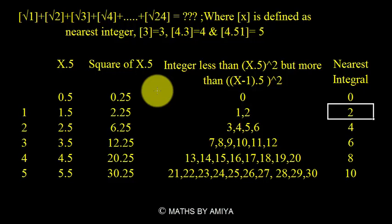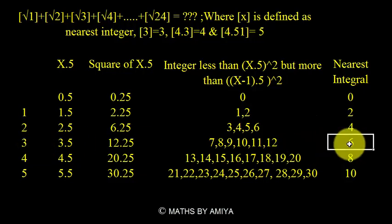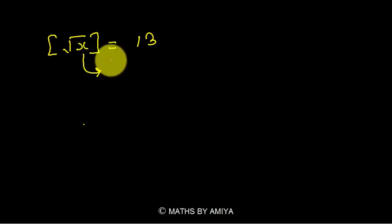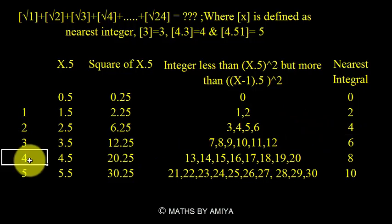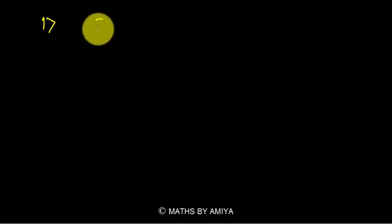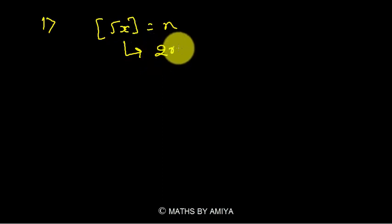The concept is: if the square root is nearest to 1, we have 2 numbers; if nearest to 2, we have 4 numbers; if nearest to 3, we have 6 numbers. Generally, if bracket of root x equals n — where the big bracket represents the nearest integer, not the greatest integer — then the number of different values of x possible is 2 times n.